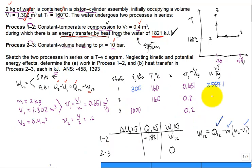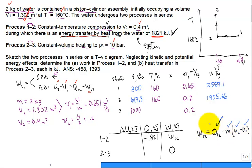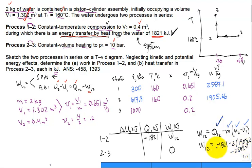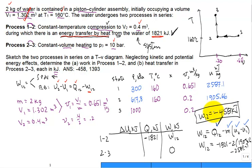With U1 and U2 now known, we enter them into the table: u2 equals 1905.66 kJ/kg at P2 equals 617.8 kPa. We can now calculate W 1-to-2: Q 1-to-2 minus mass times (u2 minus u1) equals negative 1821 minus 2 times (1905.66 minus 2587.1). The work W 1-to-2 comes out to negative 458 kilojoules, which is negative as expected for compression.